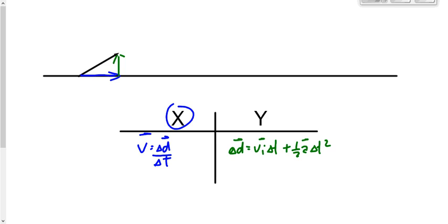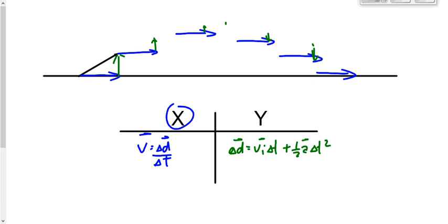If this object goes at constant velocity horizontally the whole time, it will move uniformly in the horizontal direction. But vertically, as it goes up it slows down, then it speeds up as it comes back down. So horizontally, constant velocity — the vector length stays the same. Vertically, the vector length changes because of acceleration. What does the path end up looking like?